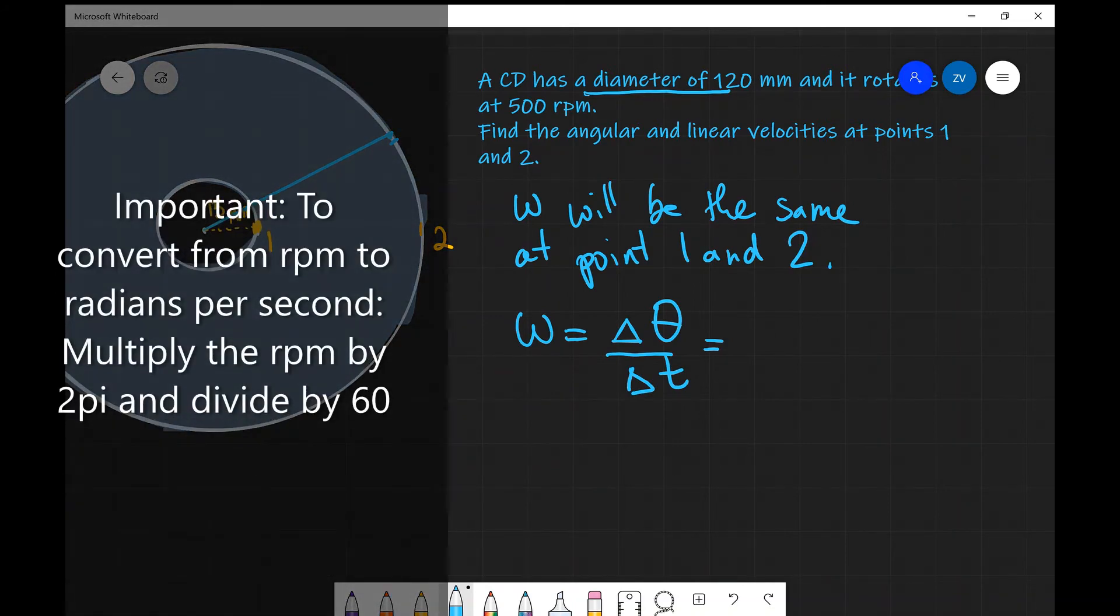that means that in one minute we cover 500 full revolutions. So our angular displacement will be 500 multiplied by 2 pi because one full revolution is 2 pi or 360 degrees and we have 500 of them. And this occurs in one minute, which is 60 seconds.